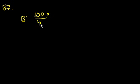We're on problem 87. Machine A produces parts twice as fast as machine B does. So machine A produces 100 parts twice as fast as machine B. Machine B produces 100 parts in 40 minutes. So B produces 100 parts in 40 minutes.